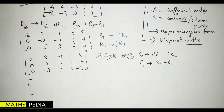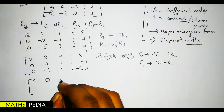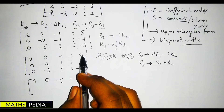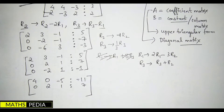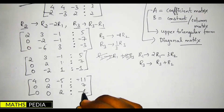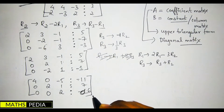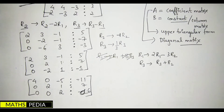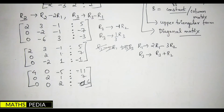Next, we need to eliminate the remaining non-diagonal elements. We divide R3 by 2 to get [0, 0, 1 | 3]. We observe that 2 and 6 are multiples, so dividing gives us a cleaner row. The updated matrix is: [4, 0, -5 | -11], [0, 2, 1 | 7], [0, 0, 1 | 3].